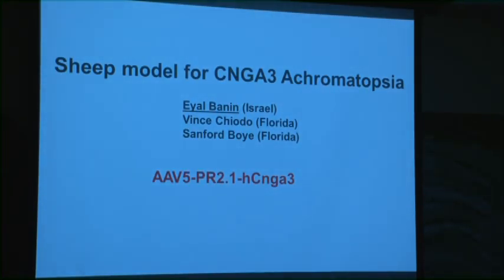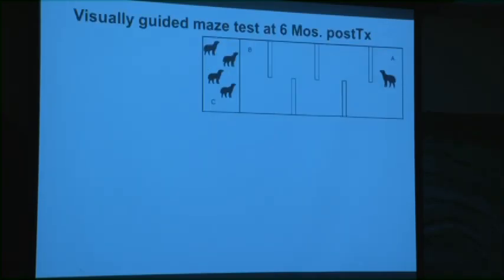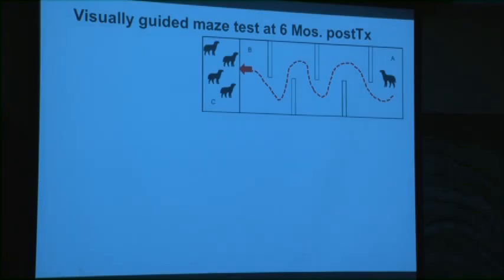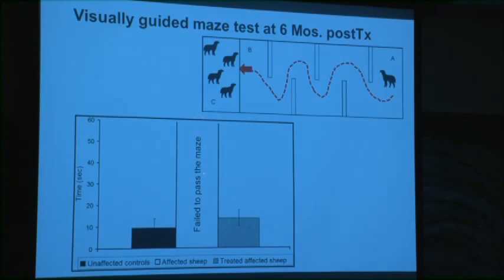We have another animal model for CNGA3 achromatopsia — a recent unpublished one run through Al-Benin in Israel at Hadassah University in Jerusalem. We made the vector: AAV5, PR2.1, human CNGA3 — not sheep, not mouse, but human. The behavioral test has sheep navigating a maze to find other sheep. An untreated animal can't find its way through, but a treated animal can — the treatment effect brings maze completion time down to almost wild-type normal level, with one eye treated.